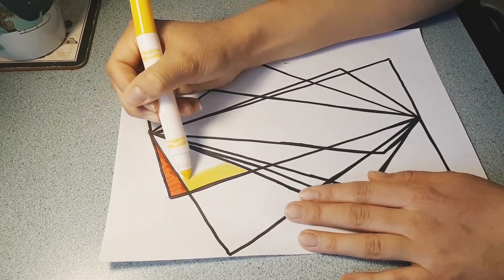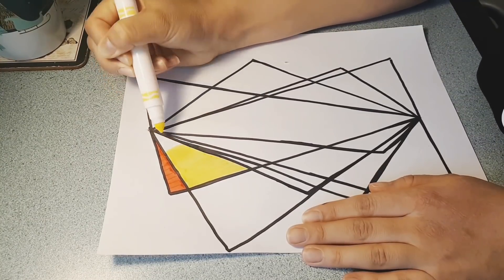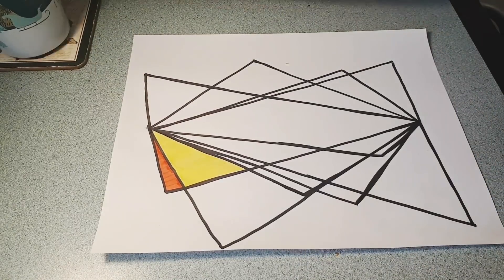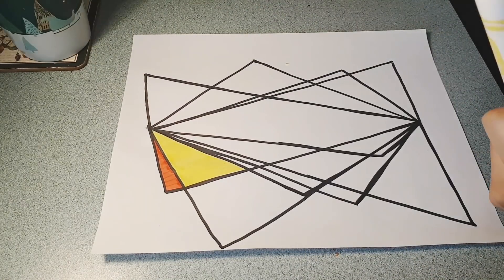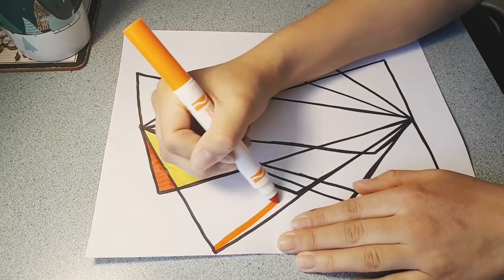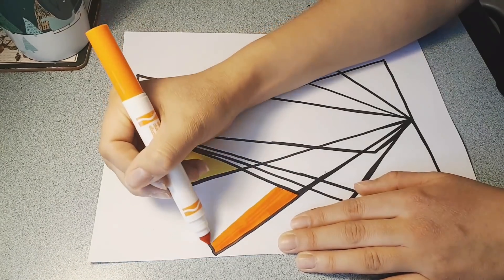Now the trick is that I cannot color two shapes beside each other with the same marker. So I can't have two yellow shapes beside each other or two red. So I have to be careful and think about what color will each shape be before I put my marker to the paper.